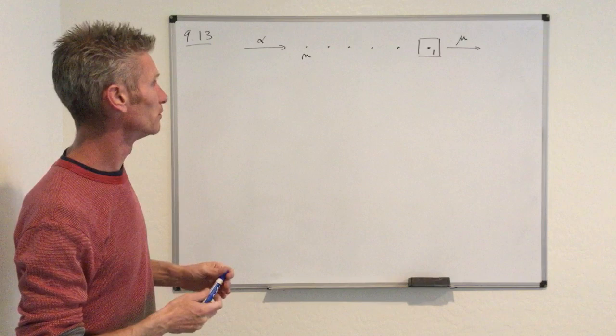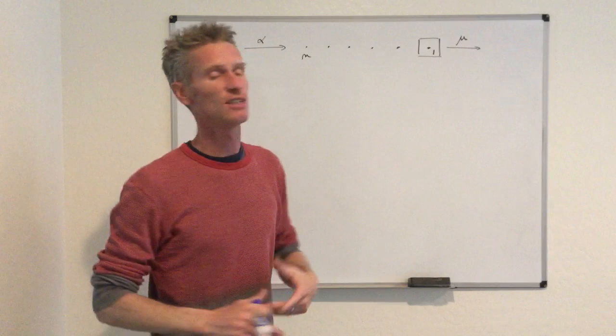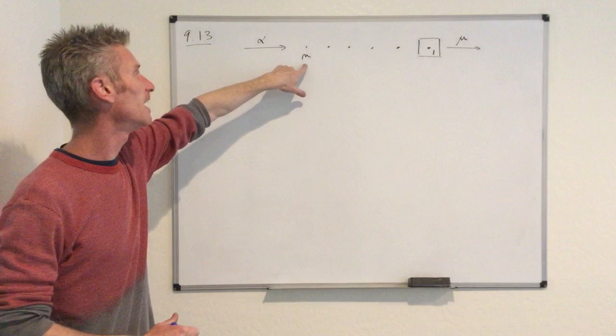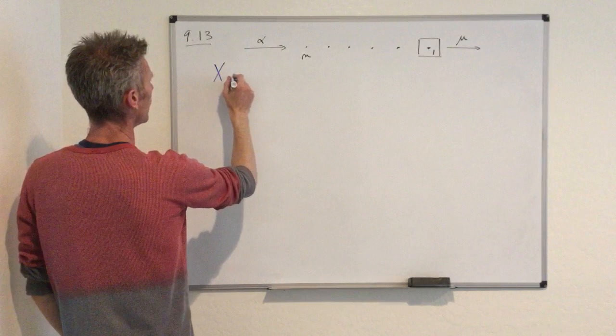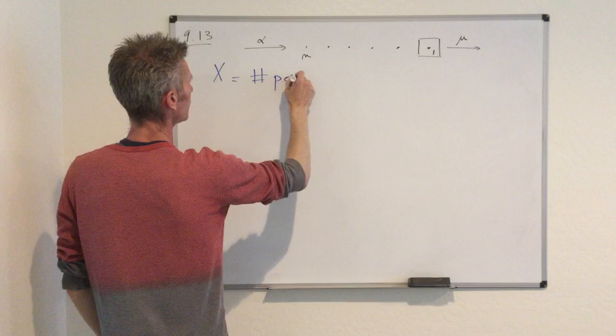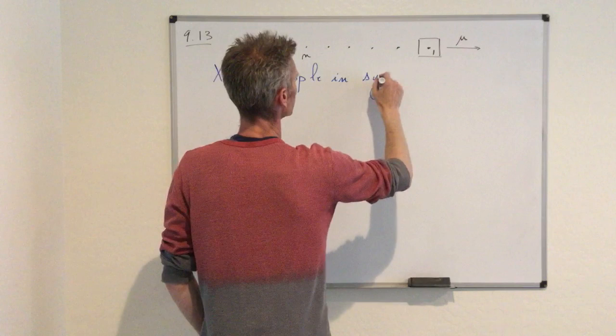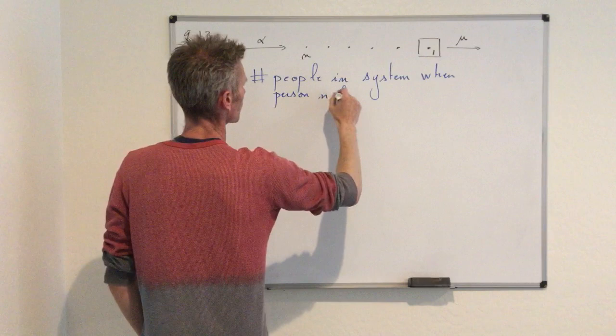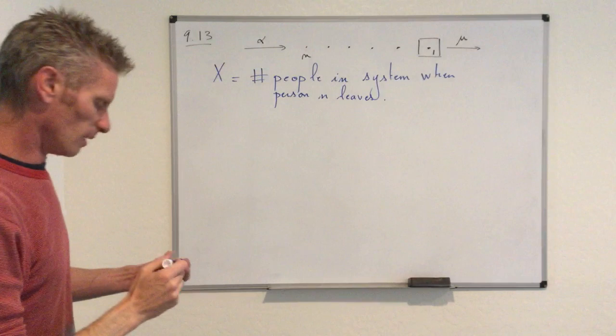There are two questions in this problem. One is about the expected value and the other is about the probability mass function of random variable X, which keeps track of the number of people in the system at the time person n leaves. So we want to understand this random variable X, defined as the number of people in the system when person n leaves.